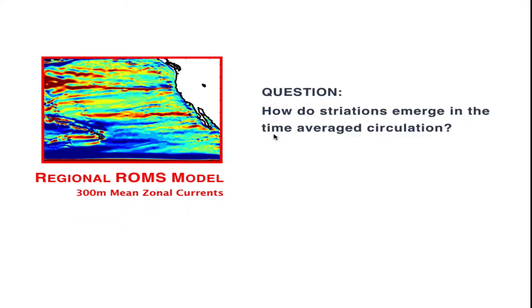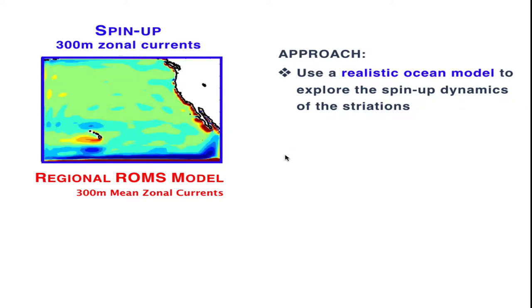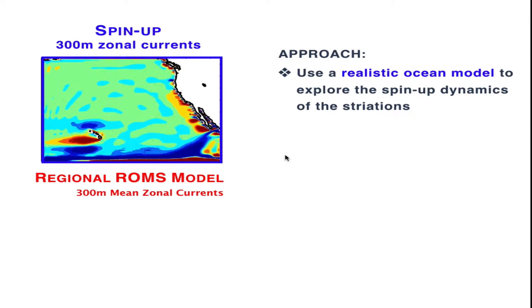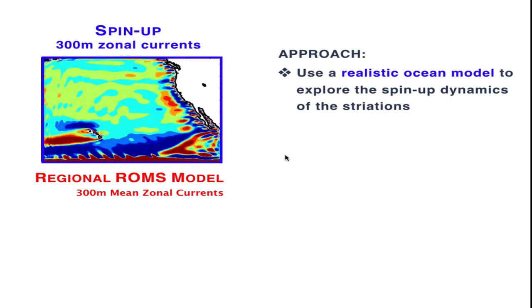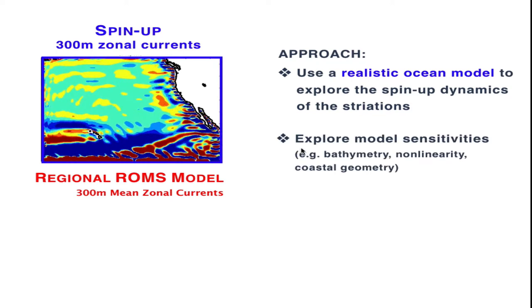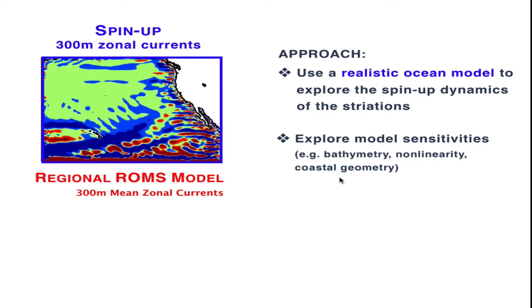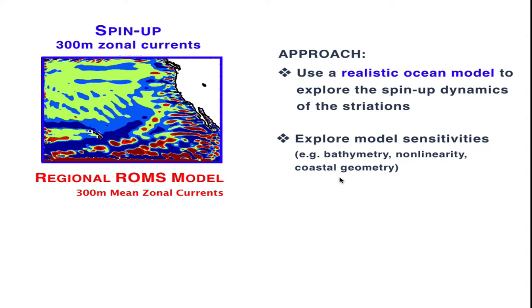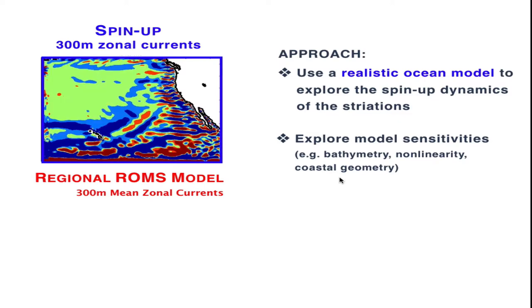We would like to ask the question of how do striations emerge in the time average circulation. To address this question, our approach is to use a realistic ocean model like ROMS to explore the spin-up dynamics of these striations. By spin-up dynamics, I mean if we take a regional simulation, a realistic simulation, and we start from a state of rest, how do these striations establish themselves in the time mean? I believe that looking at the spin-up dynamics could reveal some important physics. In addition to that, if we combine the spin-up dynamics with model sensitivity to different things like bathymetry, nonlinearity, and coastal geometry, which aim to simplify some of the physics, we should be able to isolate what are the important physical mechanisms or ingredients that are important in establishing the striations in the time average circulation.